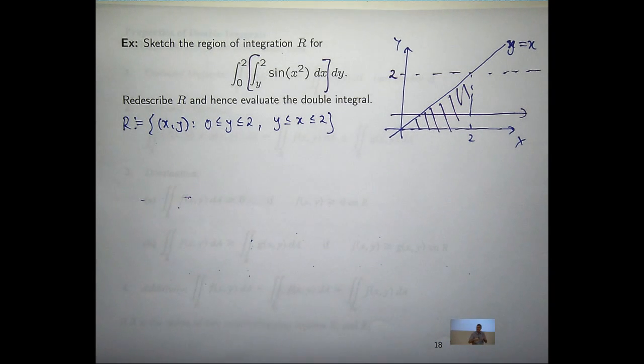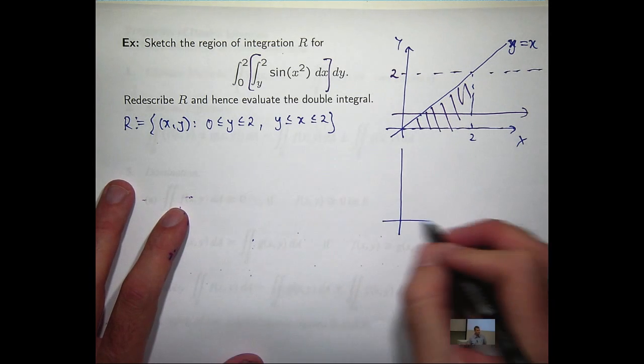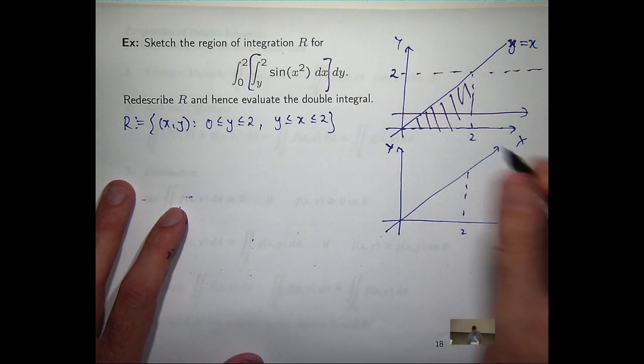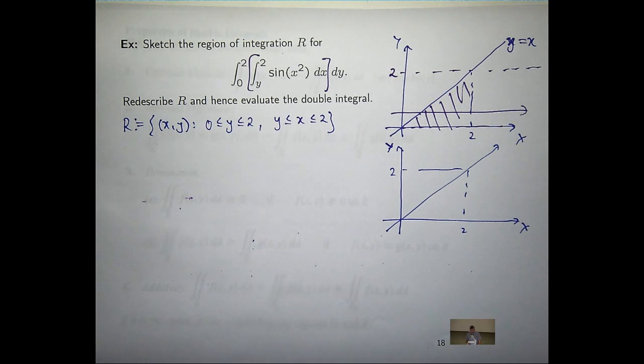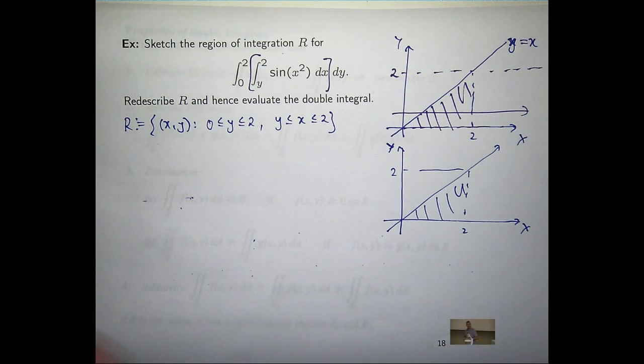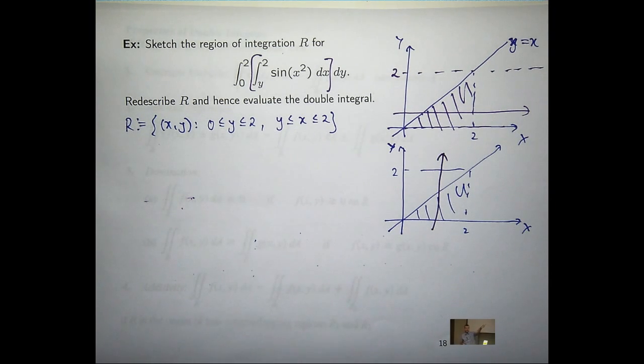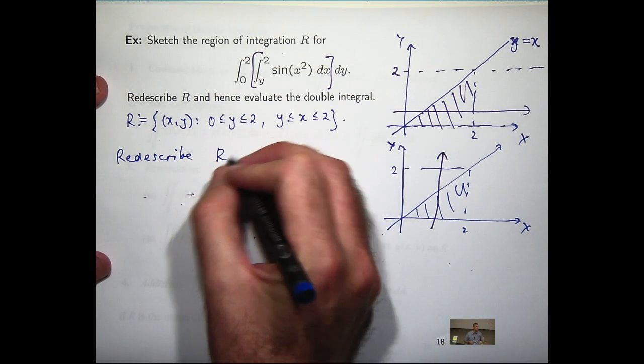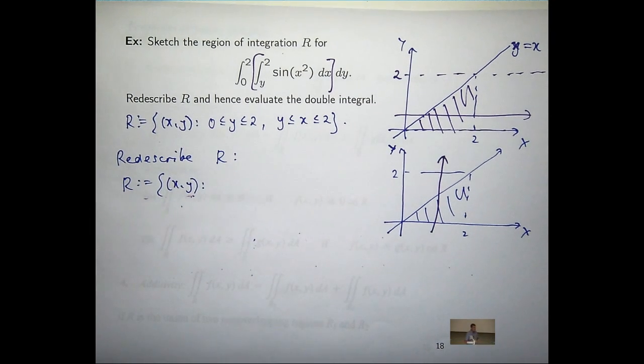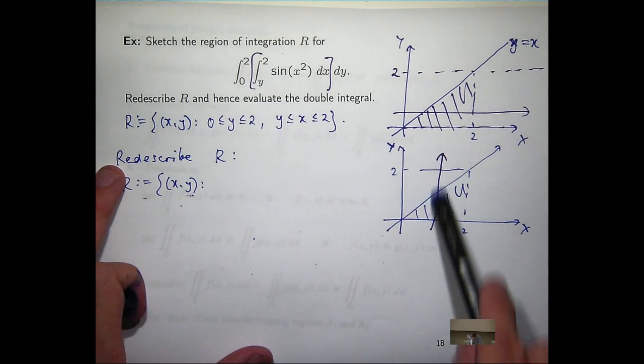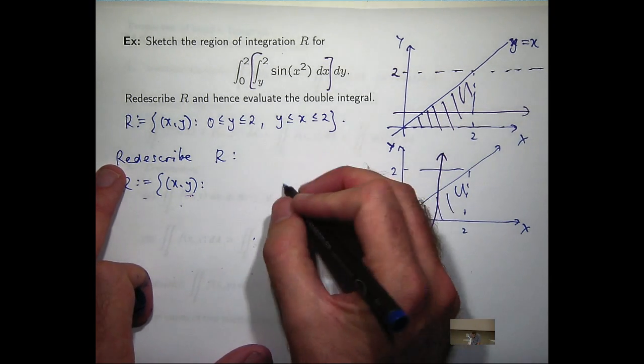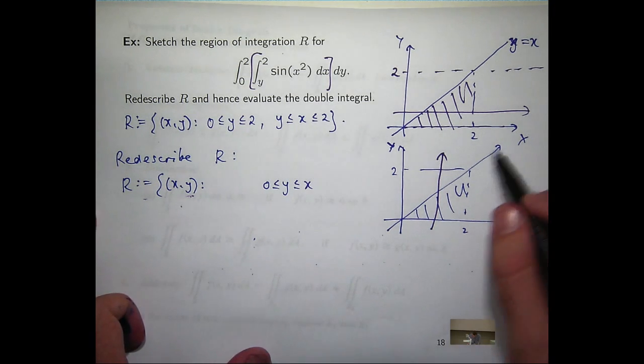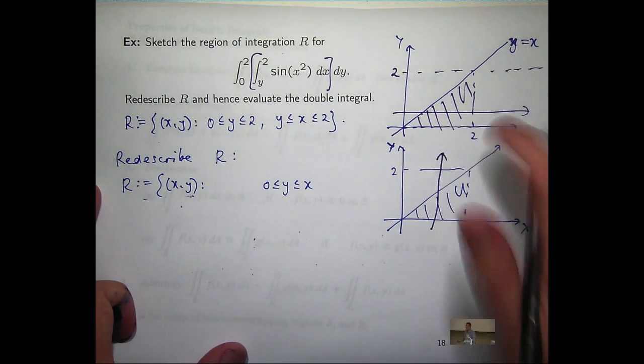So I'm going to draw another picture of the same region here. And I'm going to use a vertical line. This vertical line enters here and leaves here. So y is going to be between 0 and x. This is just the line y equals x, or x equals y.